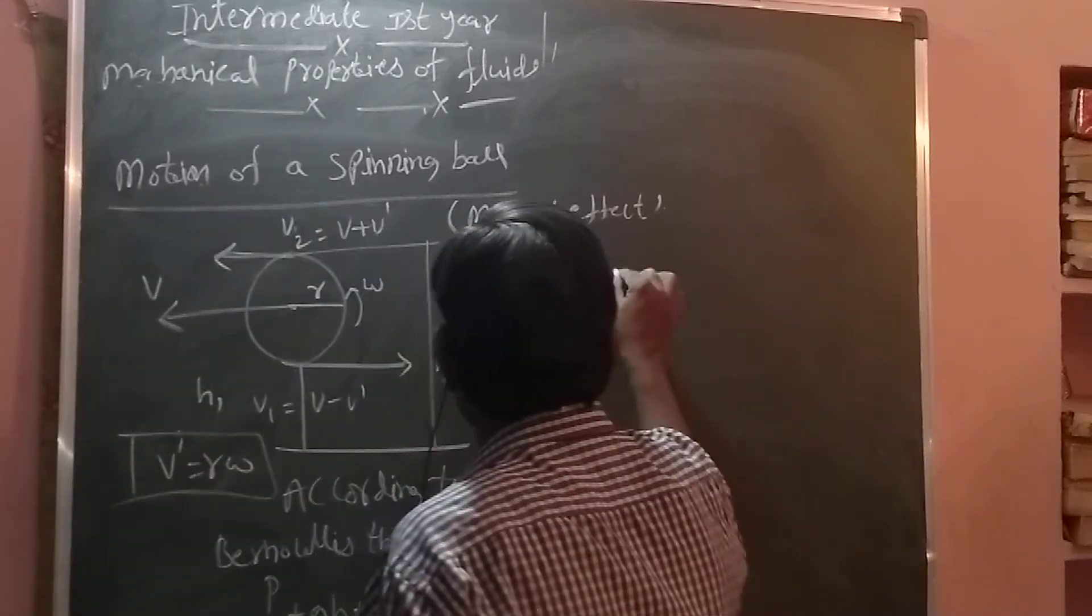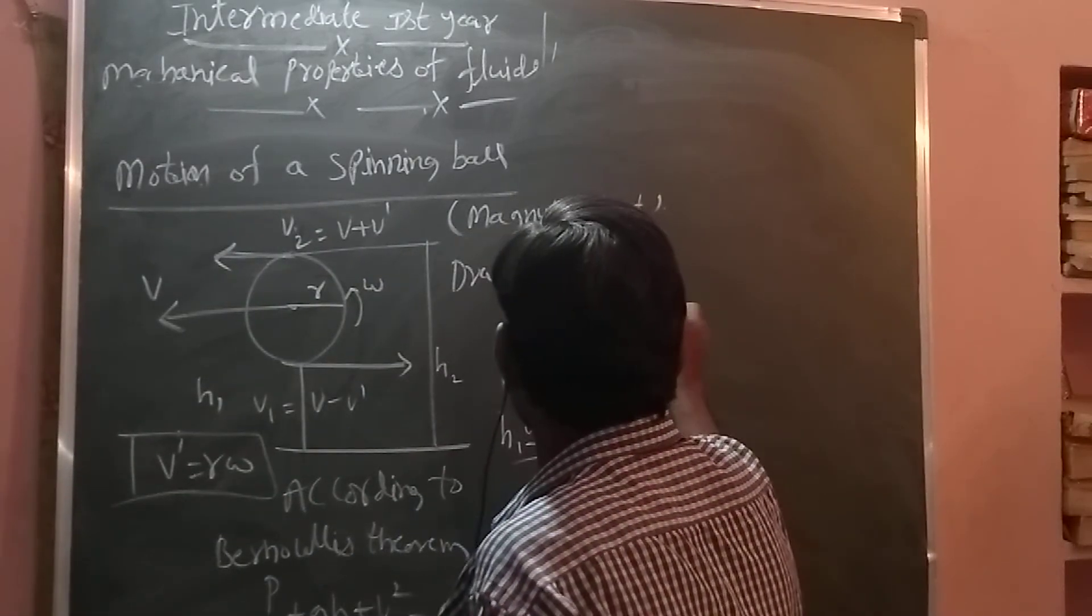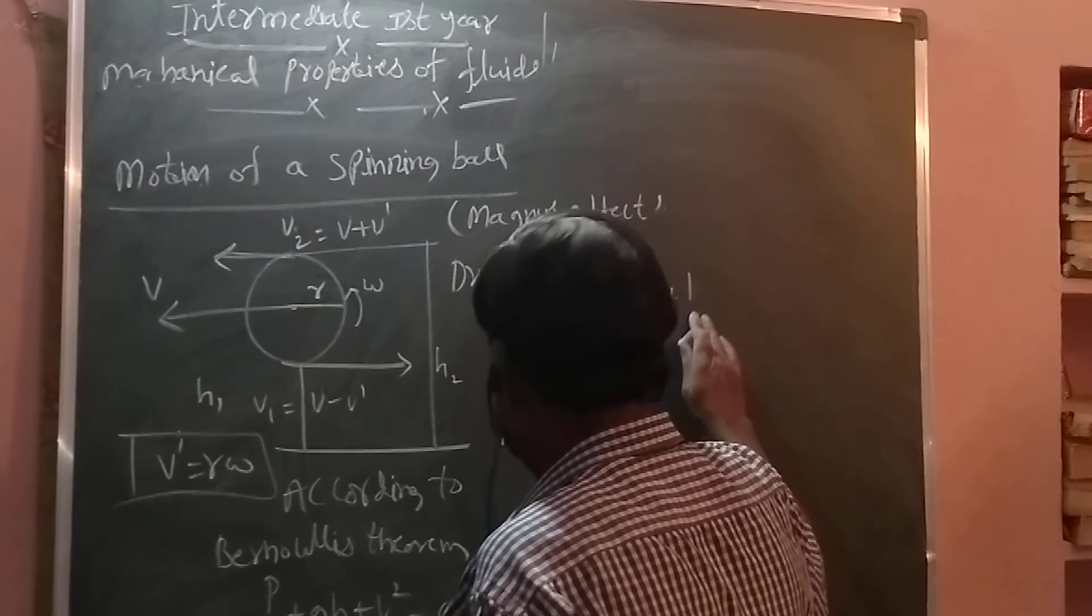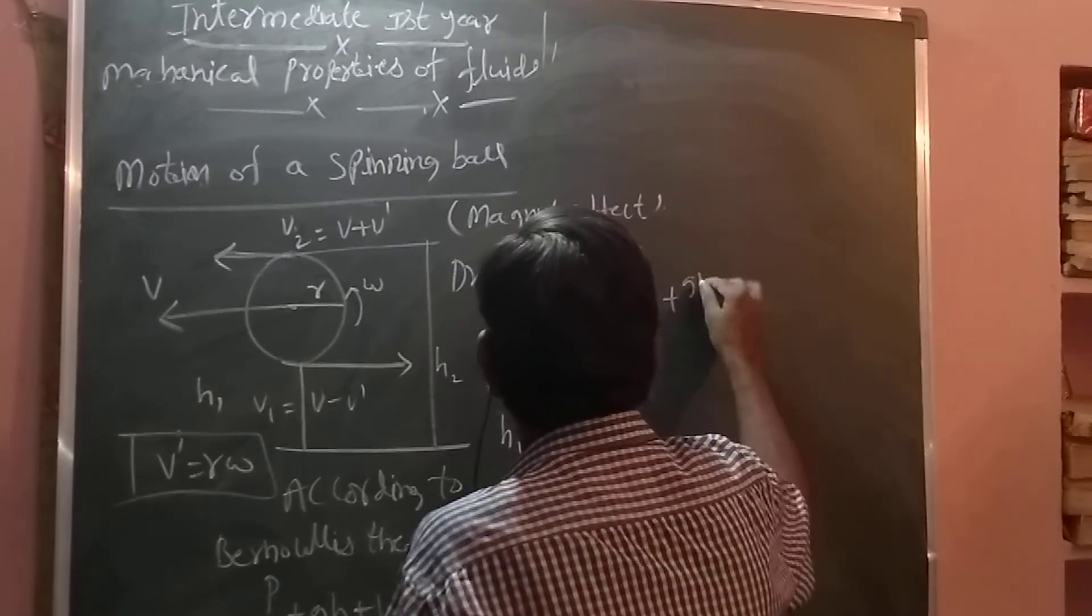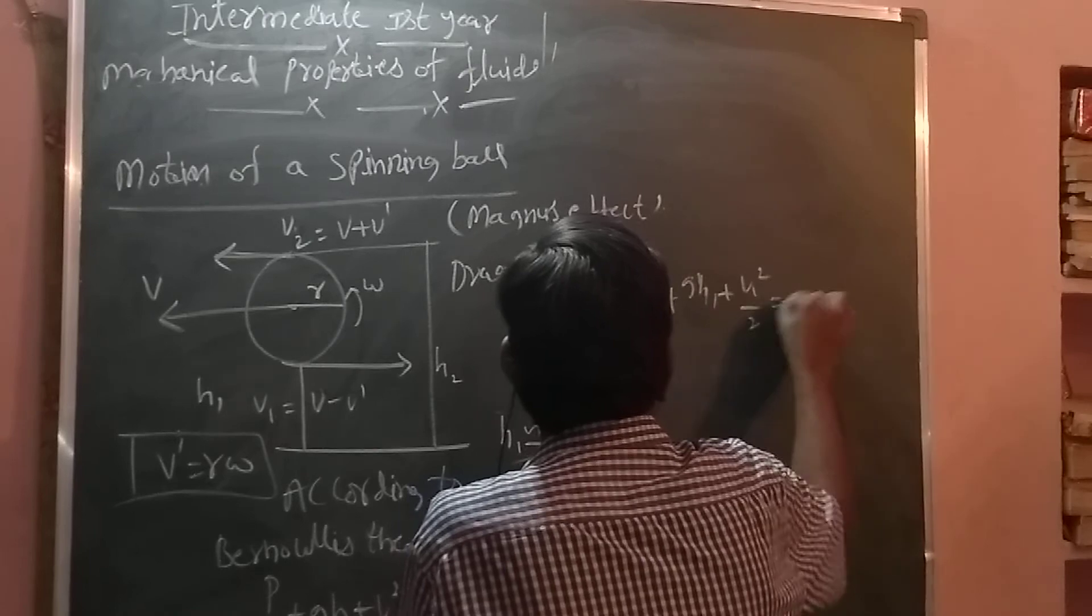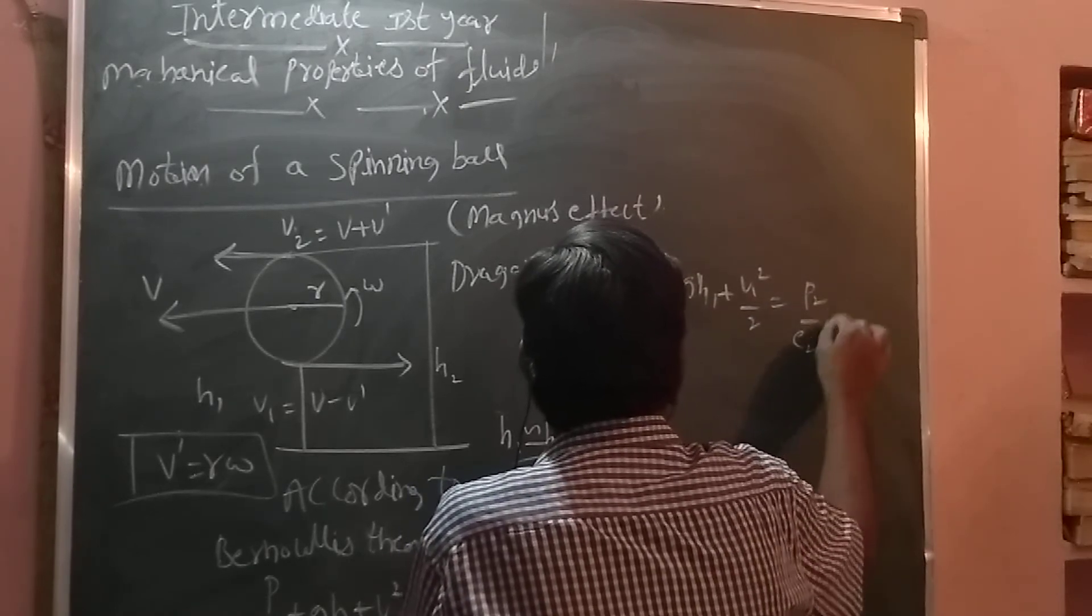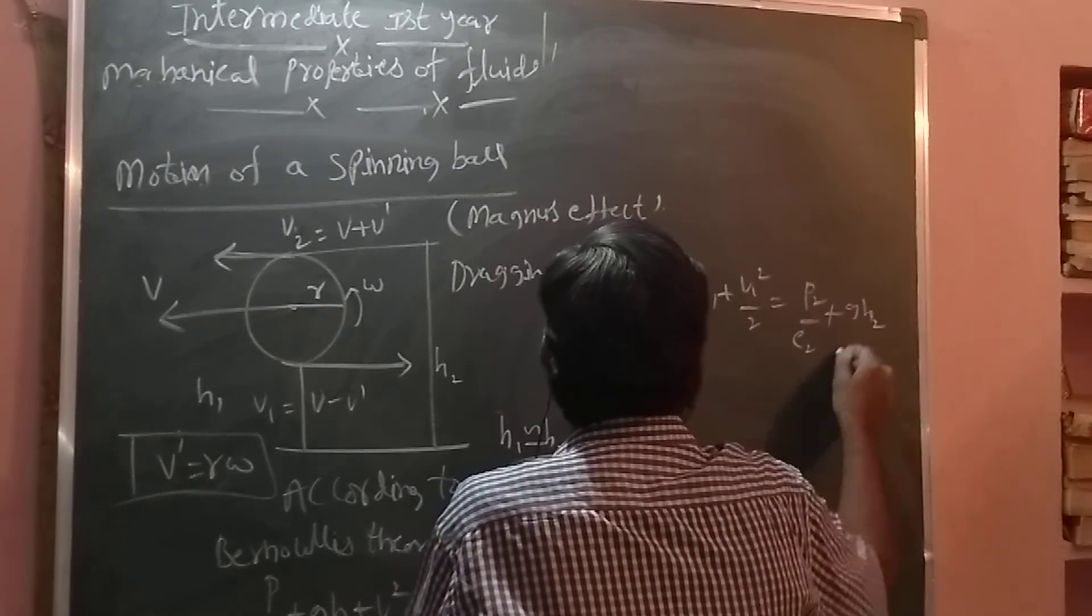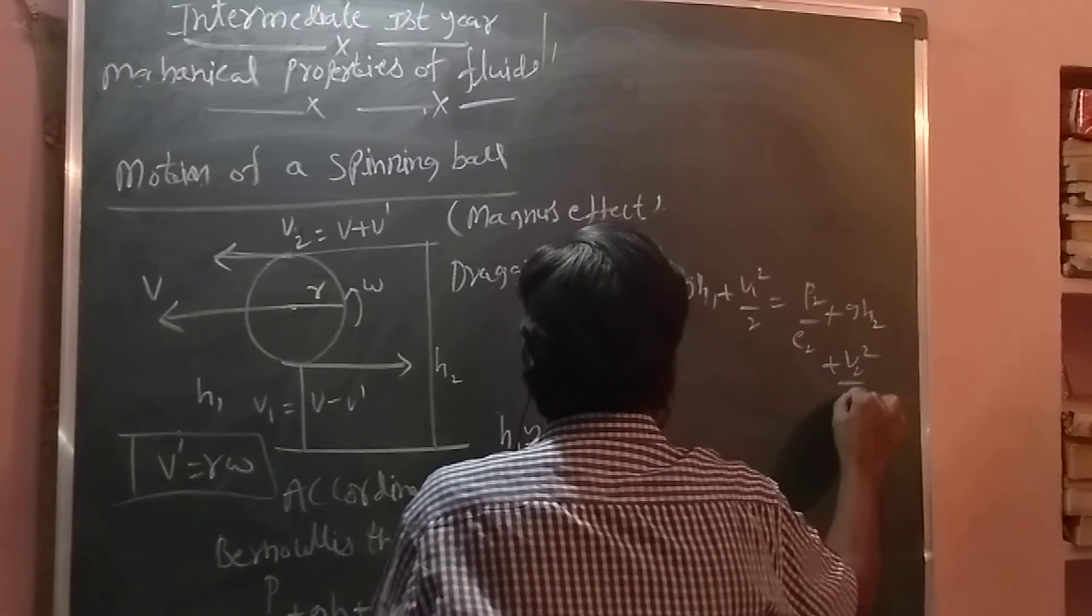You write that, then what happens here? P1 by rho 1 plus GH1 plus V1 square by 2, that equal to P2 by rho 2 plus GH2 plus V2 square by 2.